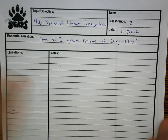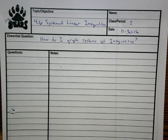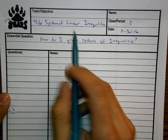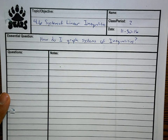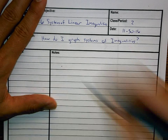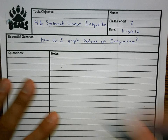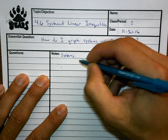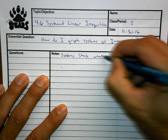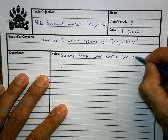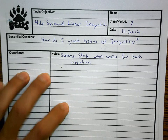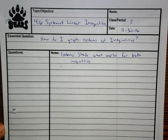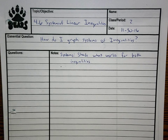Section 4.6 is very similar to 4.5 — they have the same concepts except now we're talking about a system. Earlier we talked about what systems mean: a system means two or more. So when we graph systems, we have to shade what works for both inequalities.